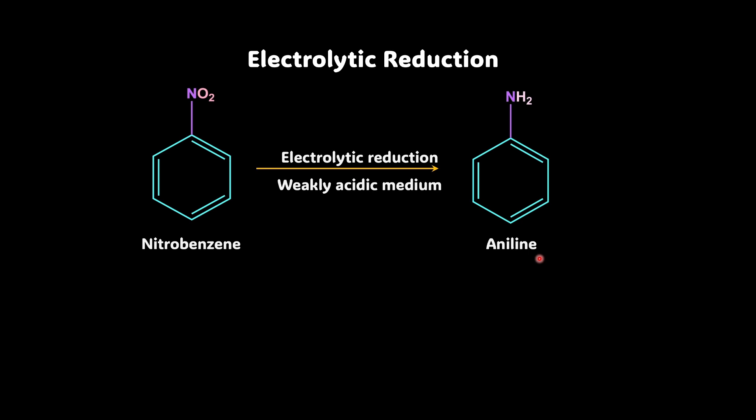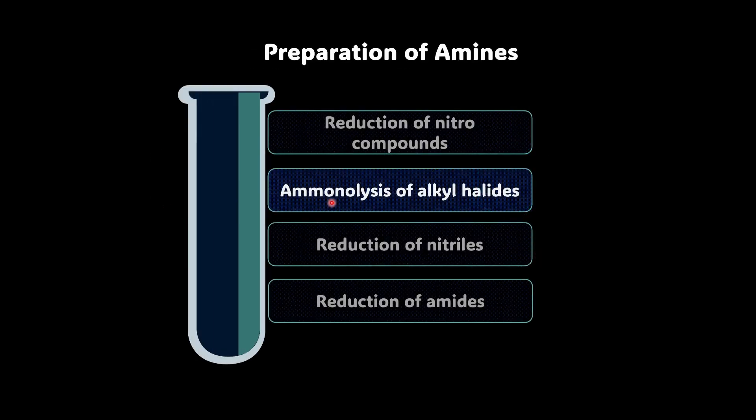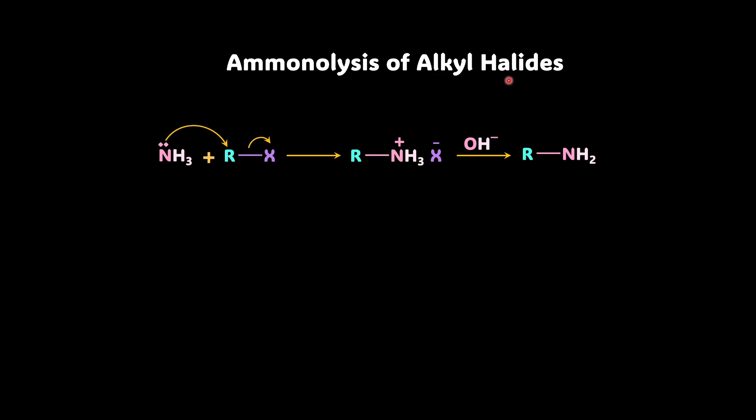Now, next reaction is very, very important, which is ammonolysis of alkyl halides. So you also see these reactions in the chapter Haloalkanes, but let's explore this reaction further. So in ammonolysis of alkyl halide, what we are doing is we are doing the ammonolysis of alkyl halide. So you can clearly see that this alkyl halide is undergoing lysis with the help of ammonia and hence the name ammonolysis. That means breaking with the help of ammonia.